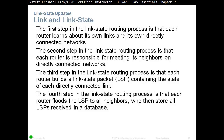The fourth step in the link state routing process is that each router floods LSPs to all neighbors, who then store these LSPs in a database. For example, if router 1 has a new network on Fast Ethernet 0/0, it will build an LSP explaining everything about that network — type, cost, and so on — and send it to router 2. Before doing any calculation or running any algorithm, router 2 will start sending it to its own neighbors. OSPF has this advantage: LSPs are exchanged and flooded to all other neighbors as quickly as possible.